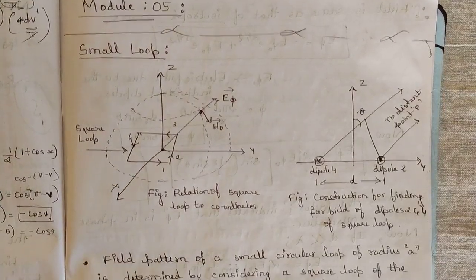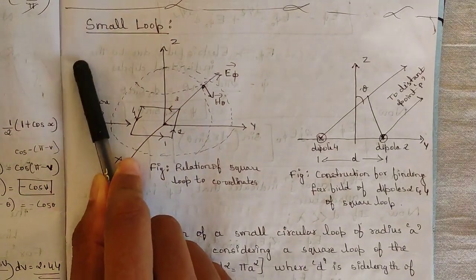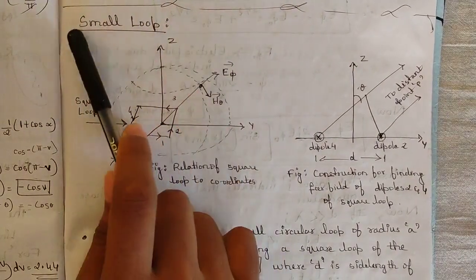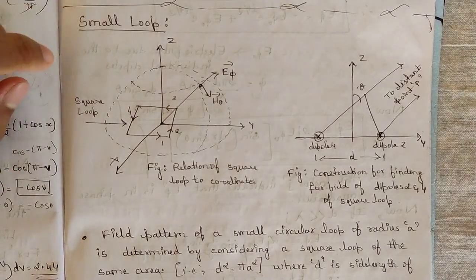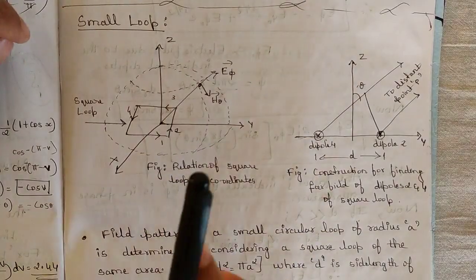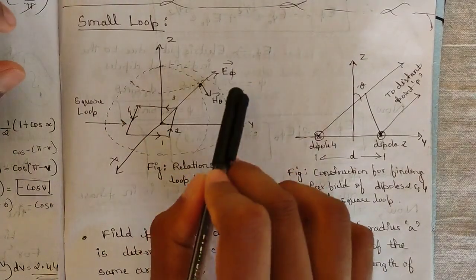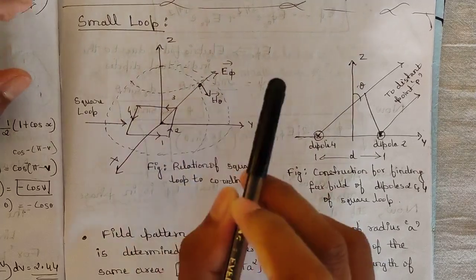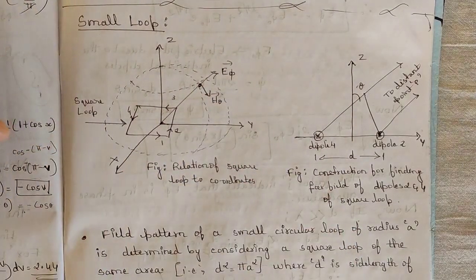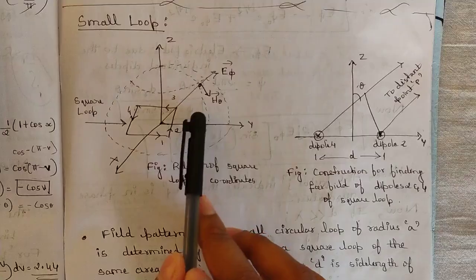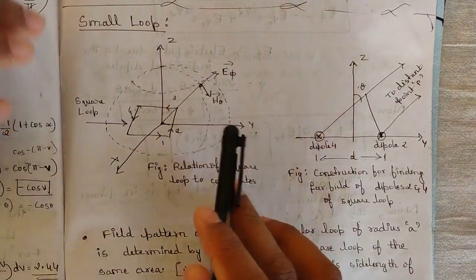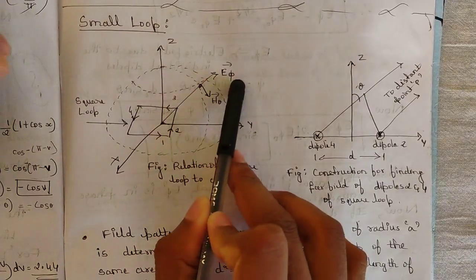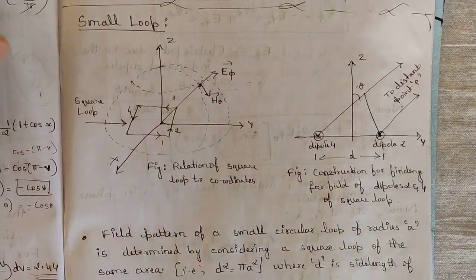The first concept here is the introduction to small loop antenna. You should consider this three-dimensional figure where it has two components: E_phi and H_theta. Similar to the linear antenna discussed in the previous module, in that we had considered two components — E_theta and H_phi — whereas in case of small loop antenna we take the inverse, considering the E_phi component and H_theta component with respect to electric and magnetic fields.